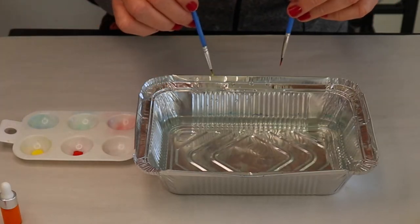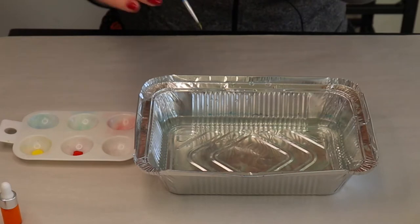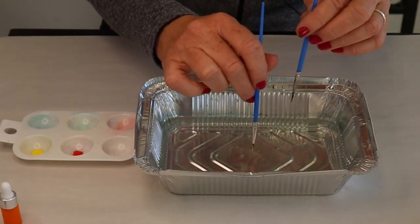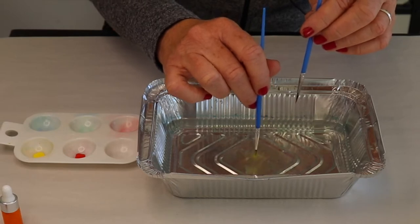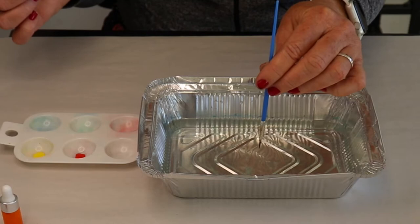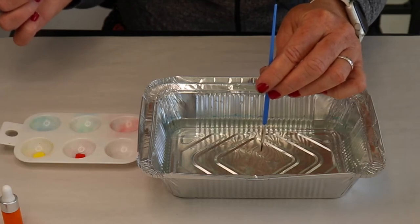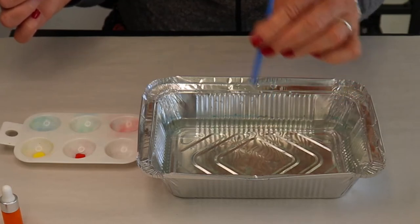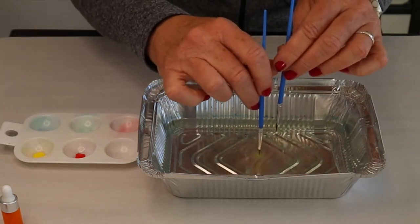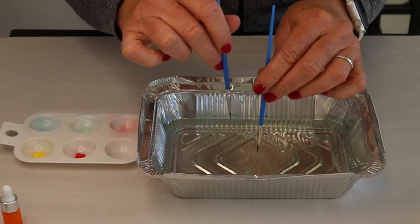In the traditional suminigashi, which is the one I love because it's very simple, you just start in the middle and barely touch the top. Now the colors are going to expand. I just thought you may not be able to see it because right now you have very little color of paint on the surface of the water. As you put more and more paint, you're going to see more and more colors show up.